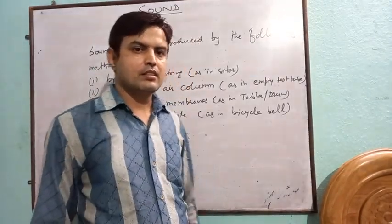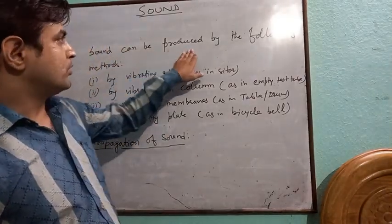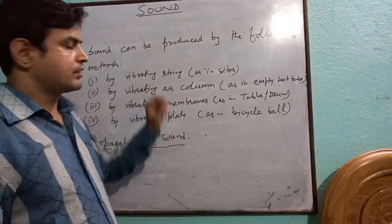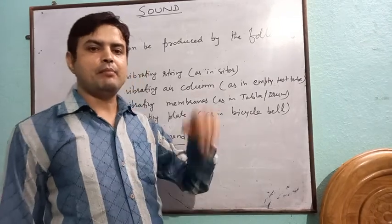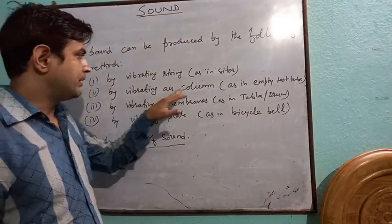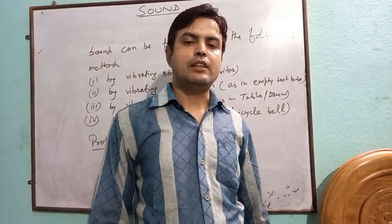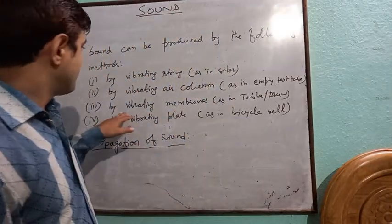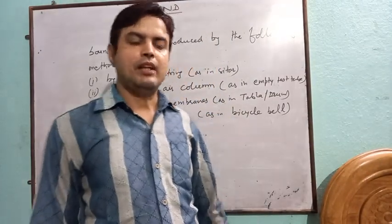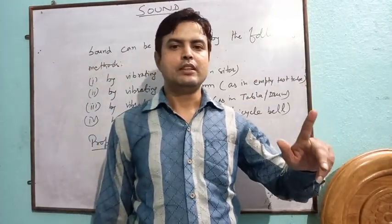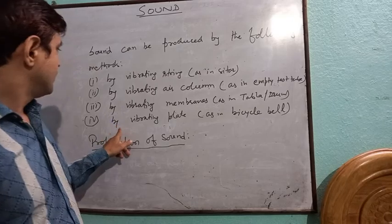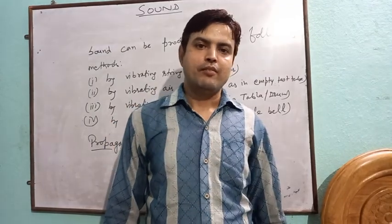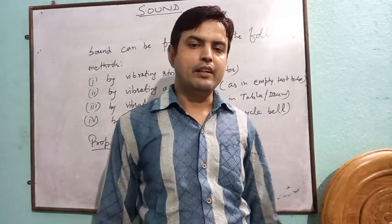From the above discussions, we can conclude that sound can be produced by the following methods: by a vibrating string, as in sitar; by a vibrating air column, as in a test tube where air blown in causes the column inside to vibrate; by vibrating membranes, as in tabla or drum, where beating the membrane causes vibration; and by a vibrating plate, as in a bicycle bell, where ringing causes the plate to vibrate and produce sound.